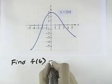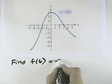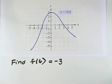So that means that f of 6 is 3 units down, or negative 3. In other words, y equals negative 3 when x equals 6.